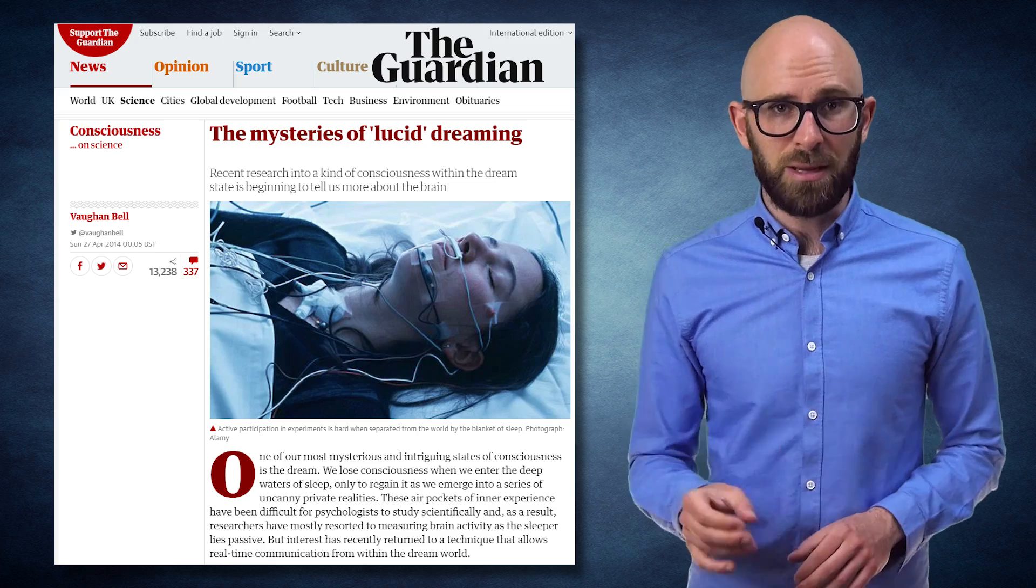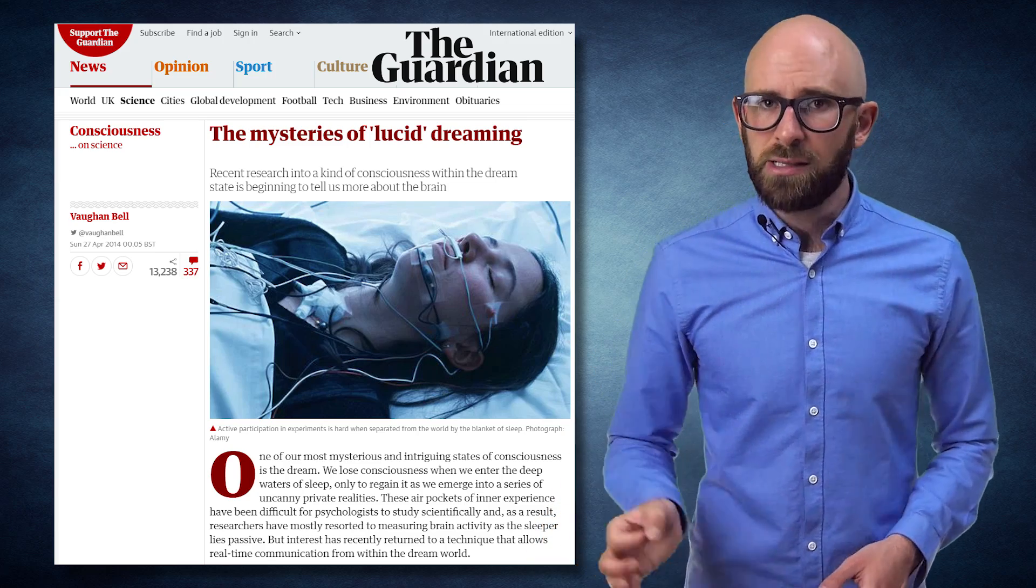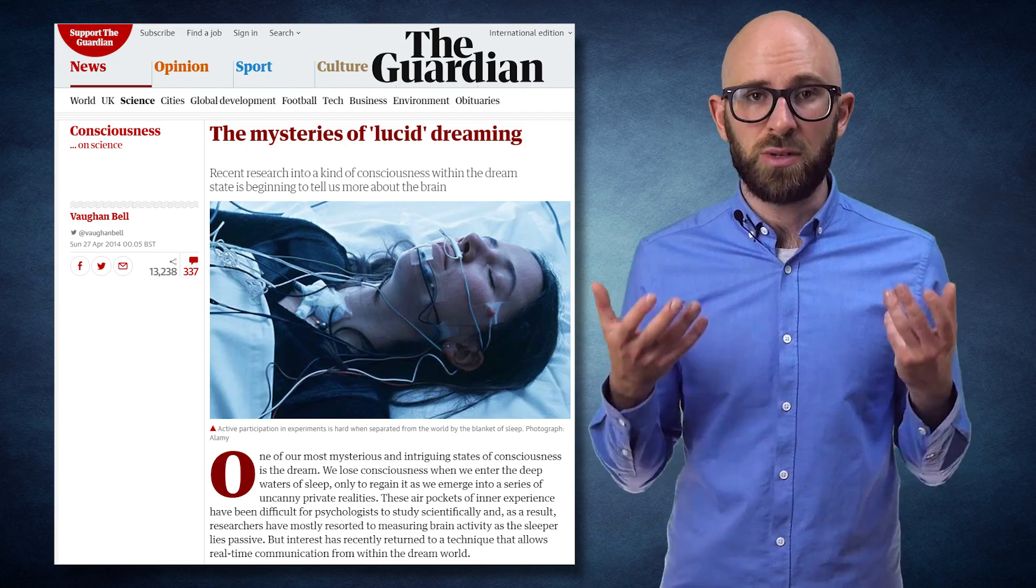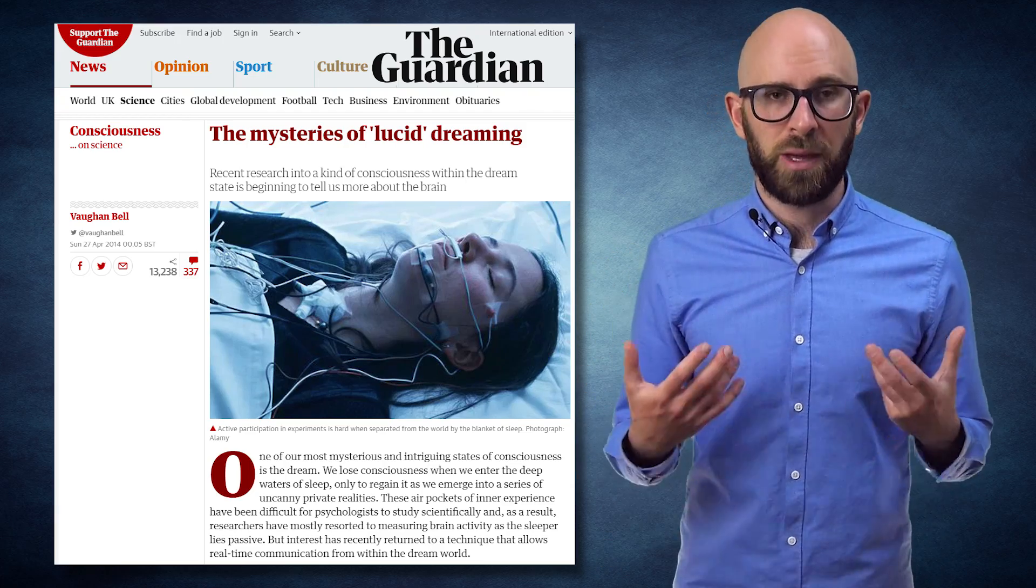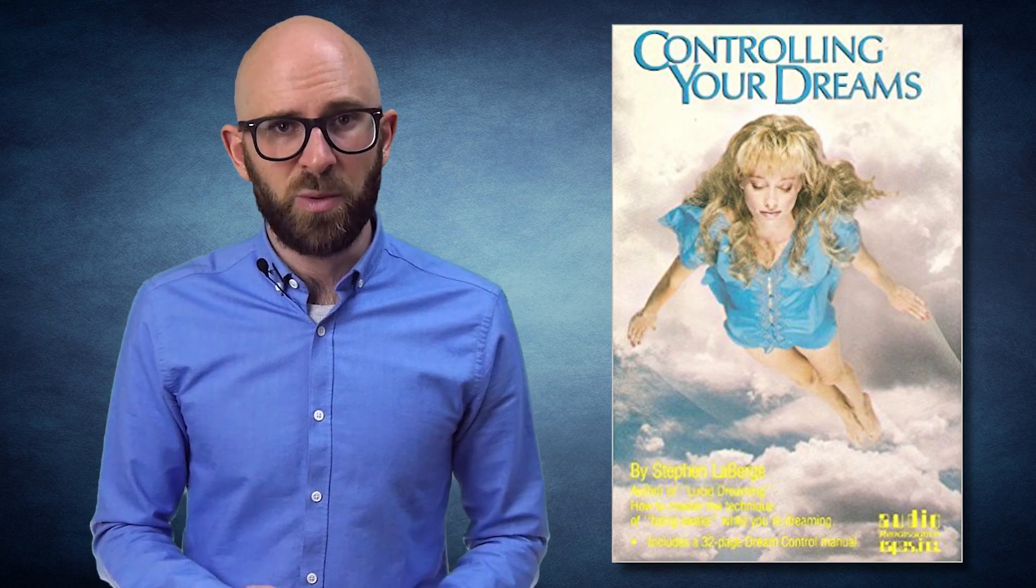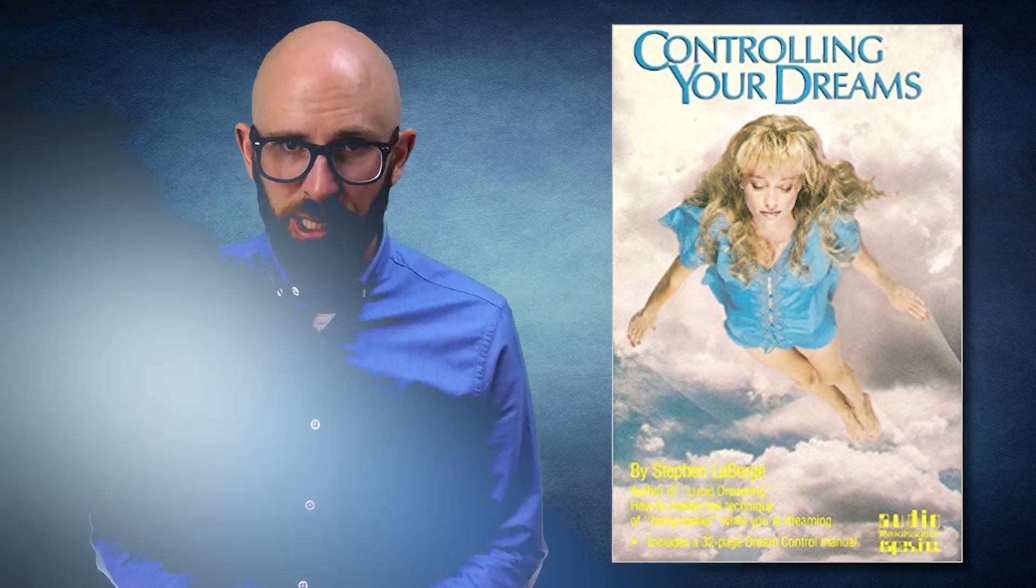In order to get to the bottom of this, several people put in a lot of work. First, a man named Keith Hearn came up with an idea where dreaming people would be able to use eye movements to signal while they were dreaming. It was later perfected by scientist Stephen LaBerge who showed conclusively from his experiments that people could indeed lucid dream and primitively communicate with the outside world using pre-agreed upon eye movements.